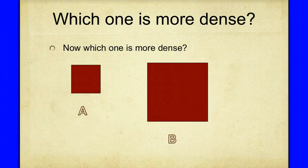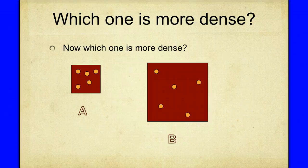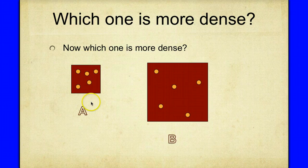What happens if we change the volume, or the amount of space? We've shrunk or reduced the size of square A, while square B has more volume. We keep the amount of matter the same — five circles in each square. Now square A has more people per given space because the space was reduced while the number of people stayed the same. Square A has now become more dense because that space has been reduced.